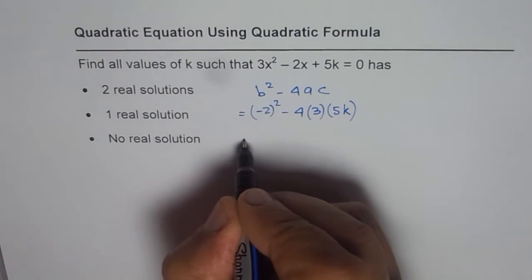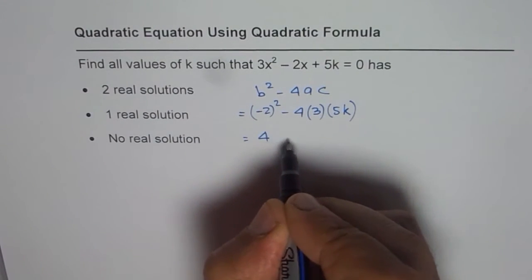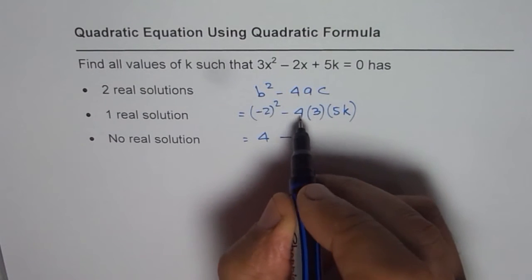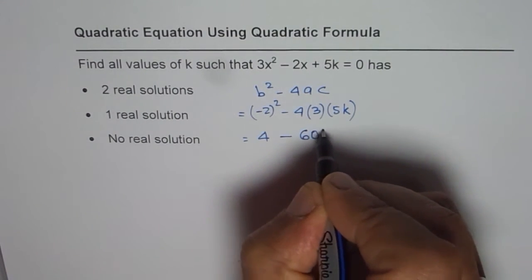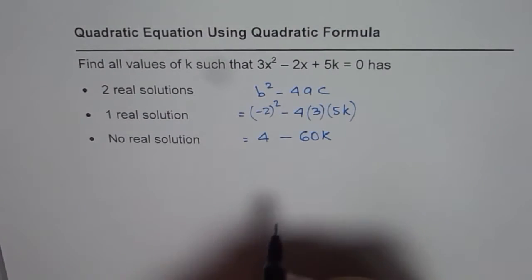So that is in fact 5k and we need to figure out what k is. That gives us 4 - 4 times 3 is 12, 12 times 5 is 60, minus 60k. So that is b² - 4ac, k is unknown to us.